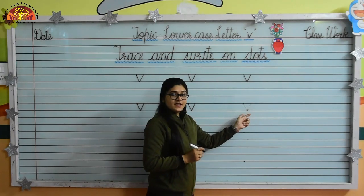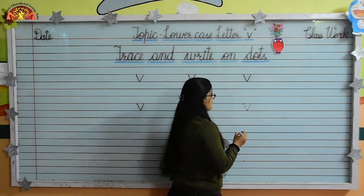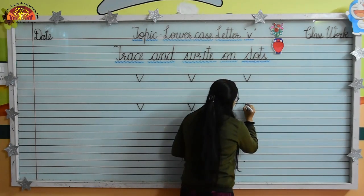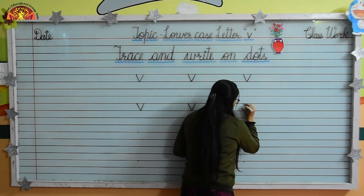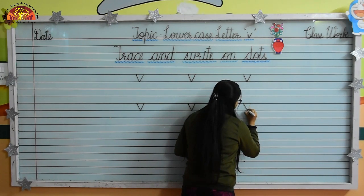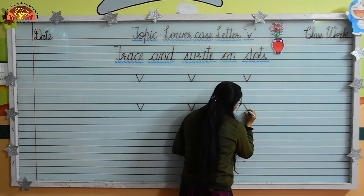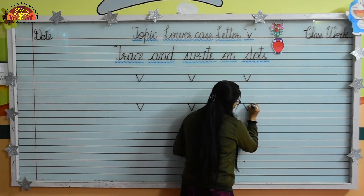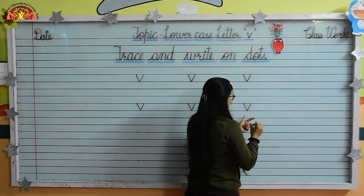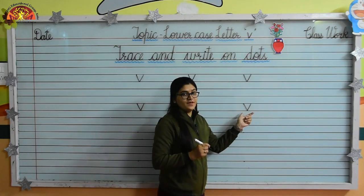Now let's trace one last time. Draw a slanting line, and from this point we will draw one more slanting line like this. Lowercase letter V.